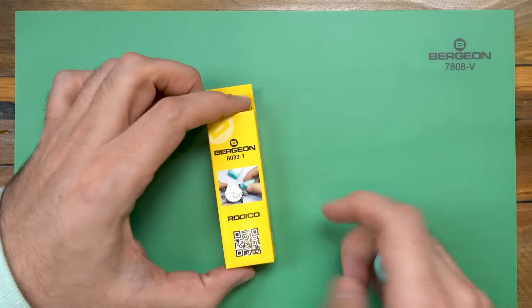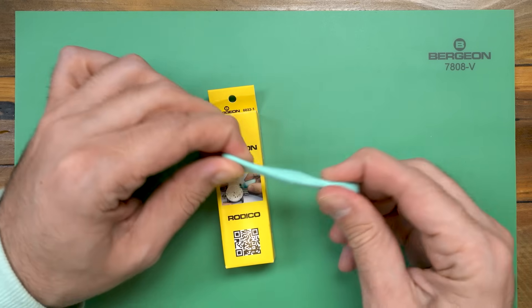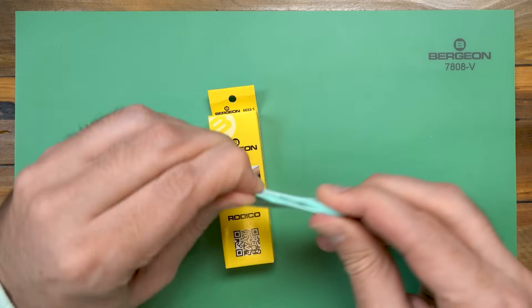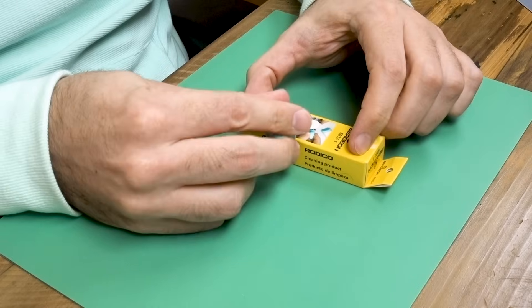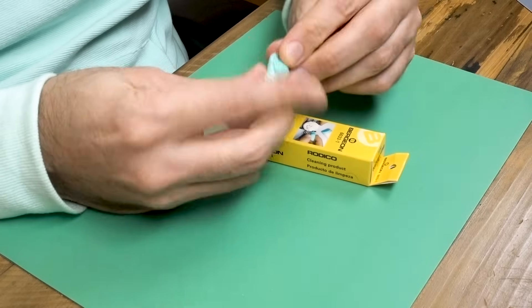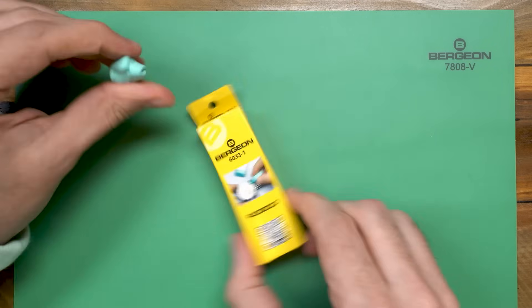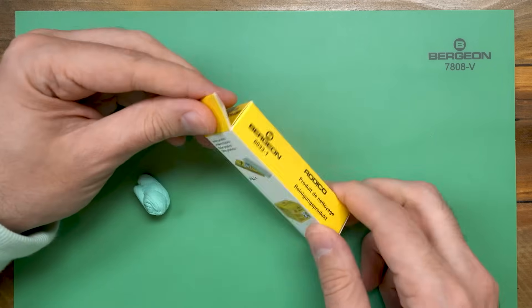Now, Rodico is a kind of putty that doesn't leave residue on things and it's used for all kinds of things from cleaning to holding to picking up parts to wiping excess oil away. It's extremely handy stuff and thankfully it's only about $5.